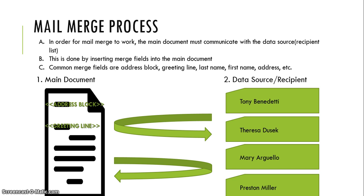The Mail Merge process works in this way. In order for Mail Merge to work, the main document must communicate with the data source. This is done by inserting merge fields into the main document. Common merge fields are address block, greeting line, last name, first name, address, and so on.